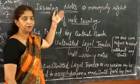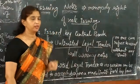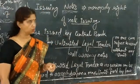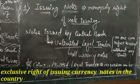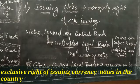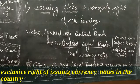The central bank enjoys a monopoly right over note issue. The central bank of a country has the exclusive right of issuing notes. This is called the currency authority function of the central bank.